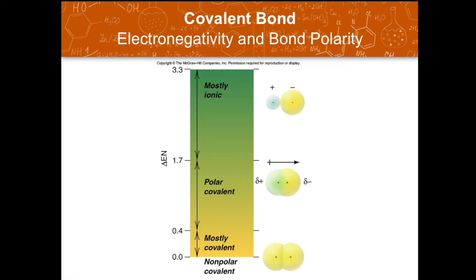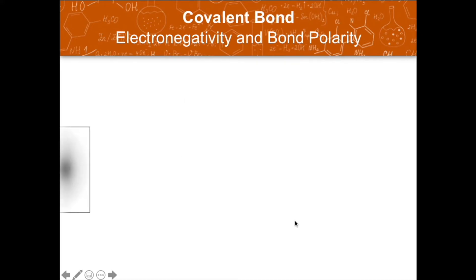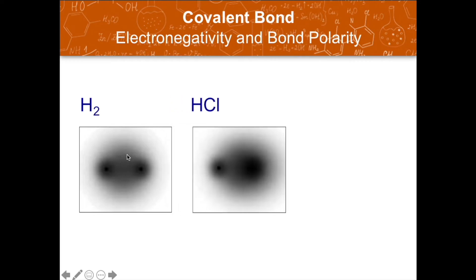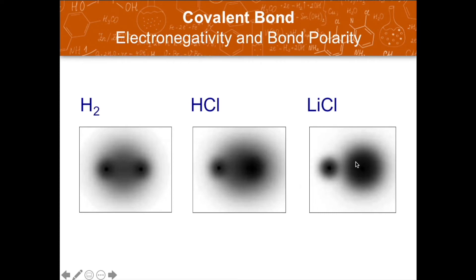Here is another illustration showing the classification of bonds. For the non-polar covalent bond, there is equal sharing of electrons since the electronegativity values of the atoms involved are similar. In the polar covalent bond, there is unequal sharing due to differences in electronegativity values. The last image illustrates the transfer of electrons forming ionic bonds between lithium and chlorine.